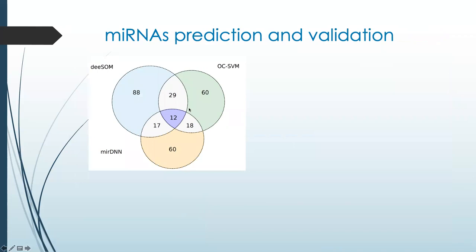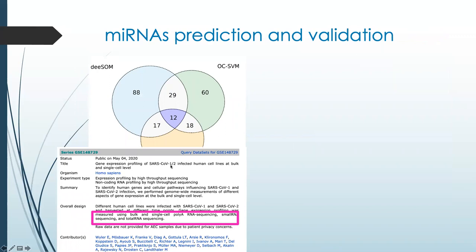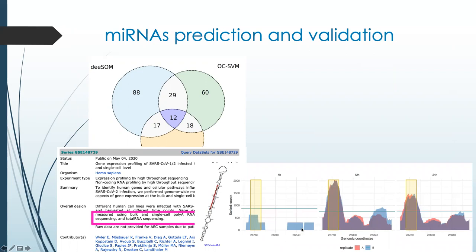The validation of the 12 precursor microRNA candidates was done by analyzing data from an RNA-seq experiment aimed to quantify RNA in cell lines of the human lung epithelium infected by SARS-CoV-2. We obtained this data from a public repository and analyzed the expression profiles of the small RNAs, mainly focusing on the regions covered by our candidate sequences. We found that six of our 12 candidates revealed expression profiles compatible with microRNA production in those cell cultures upon infection.